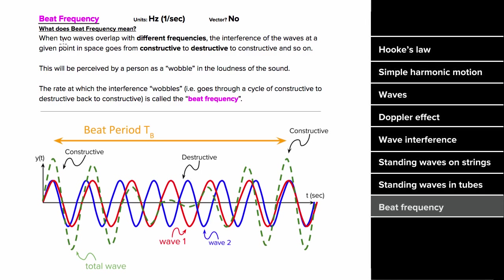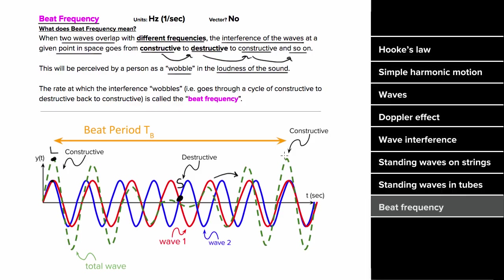Beat frequency refers to the phenomenon where two waves overlap with different frequencies. The interference at a point turns from constructive to destructive and back to constructive, which — for sound waves — you perceive as a wobble in loudness. Since the waves have different frequencies, one wave starts to go out of phase with the other, eventually becoming destructive (soft), then one peak catches up and the waves become constructive again (loud). The time to go from loud to soft to loud again is the beat period; the beat frequency is one over the beat period.